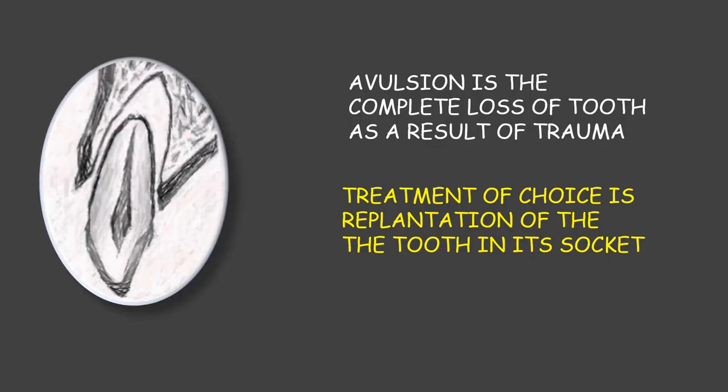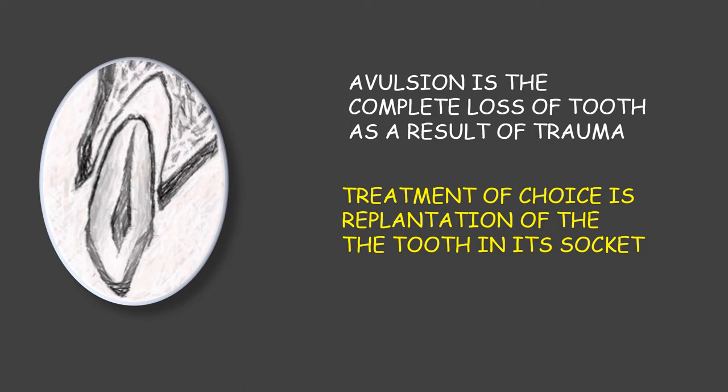Avulsion is a complete loss of tooth as a result of trauma. The treatment of choice is re-implantation of the tooth in its socket. The goal of re-implantation is to restore, at least temporarily, the aesthetics and function. When we re-implant the tooth, the bony tissue and the gingival tissue would heal normally, even if the tooth is lost later on. Therefore, the decision to re-implant the tooth is always correct, even if your extra-alveolar time period is greater than 60 minutes.